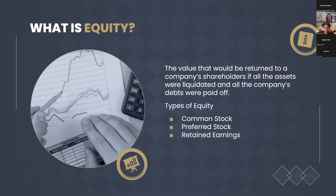Preferred stock is the next tier up. These stockholders have a higher claim on the company's assets and earnings than common stockholders. They receive their dividends before common stockholders and have priority in asset distribution if the company is liquidated. However, they don't often have voting rights or as much say in management decisions. Dividends for this kind of stock tend to be fixed and cumulative — if a company skips a payment, it must pay in the future before any common stocks are paid. Retained earnings can also be thought of as equity — the portion of a company's net income not distributed as dividends but reinvested in the business.